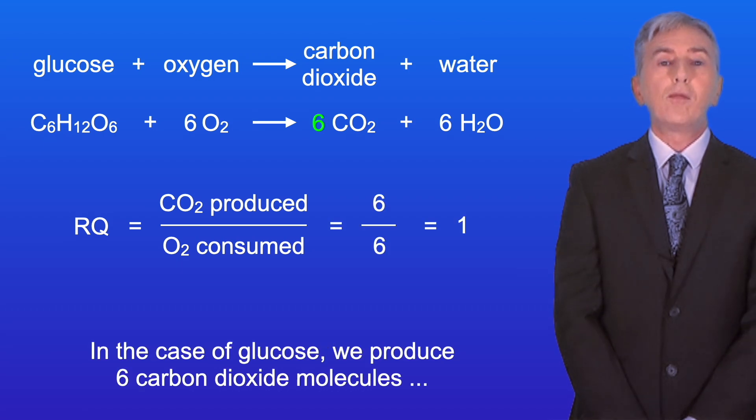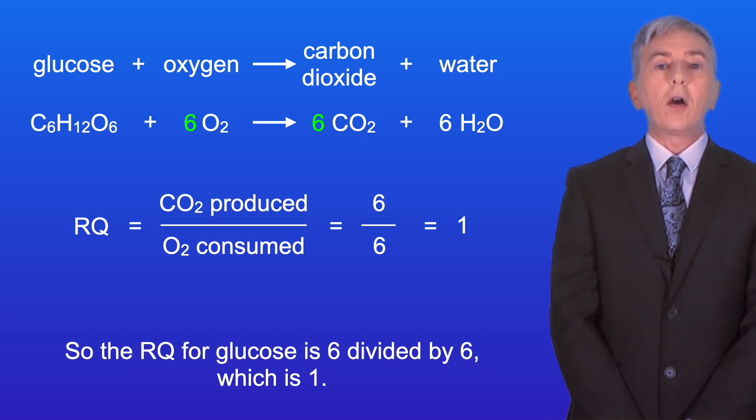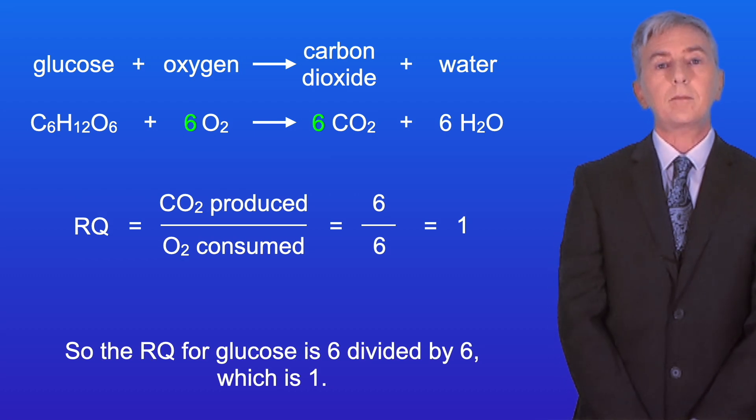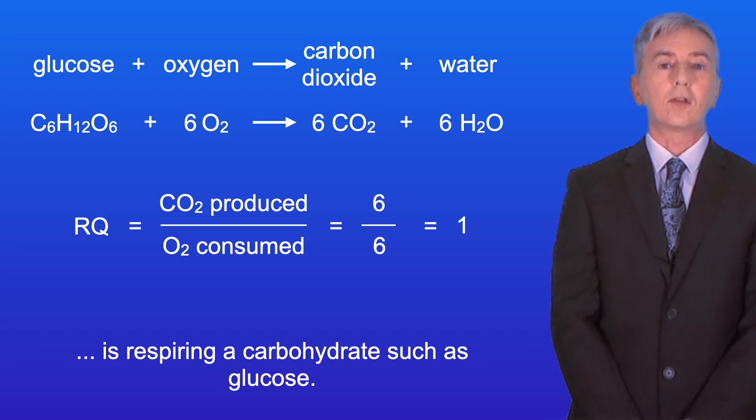In the case of glucose, we produce six carbon dioxide molecules and consume six oxygen molecules. So the RQ for glucose is six divided by six, which is one. If we get an RQ of one, this tells us that the organism is respiring a carbohydrate such as glucose.